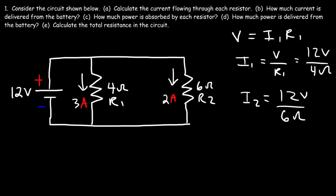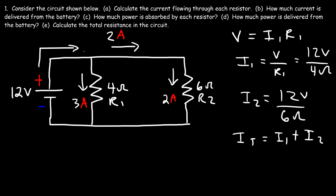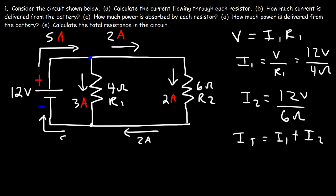Now how much current is delivered by the battery? Keep in mind there are 2 amps of current flowing in one section of the wire. The current released by the battery is the sum of the currents flowing through each resistor — the current that flows through that segment has to be 5 amps. At the junction, 2 amps went to the right and 3 amps went below. The 2-amp current flows through that portion of the wire and then meets up with the 3-amp current, returning to the battery with a current of 5 amps.